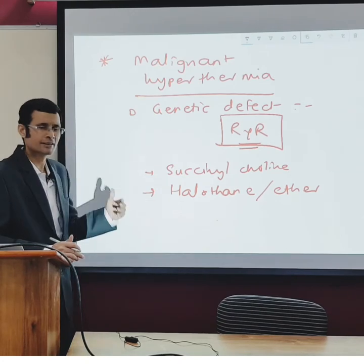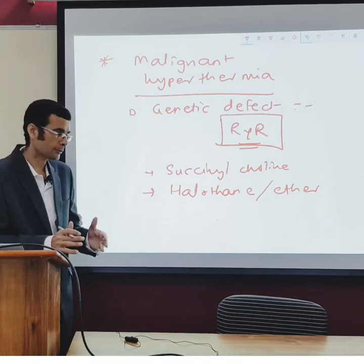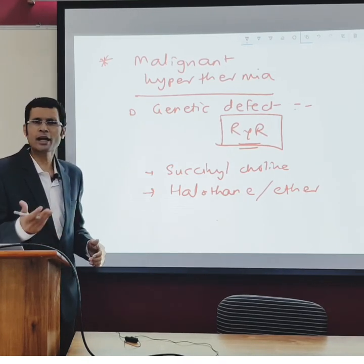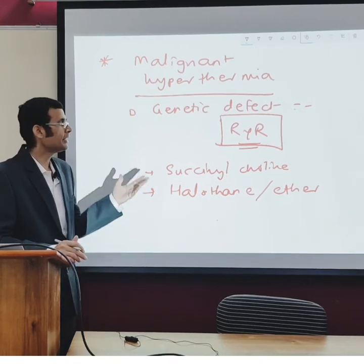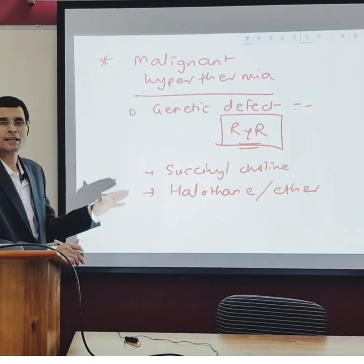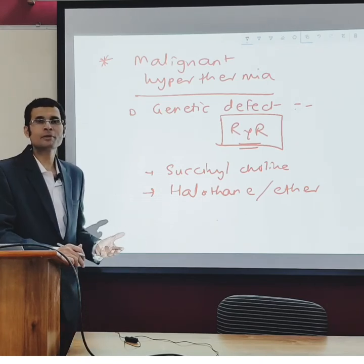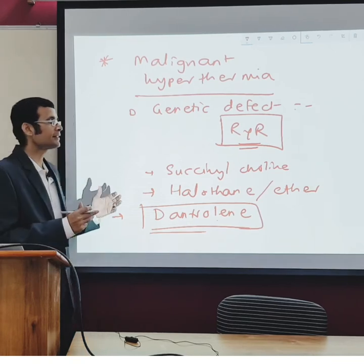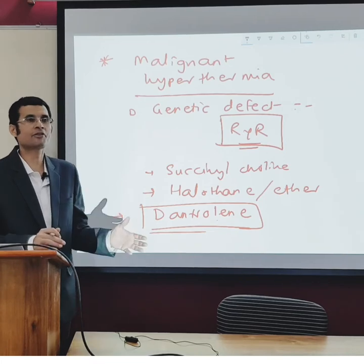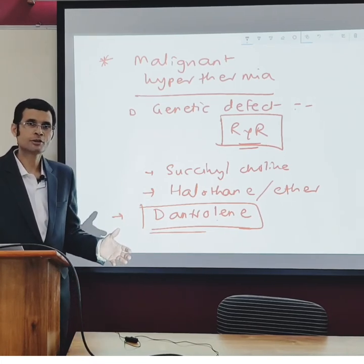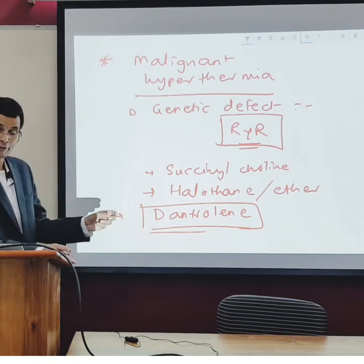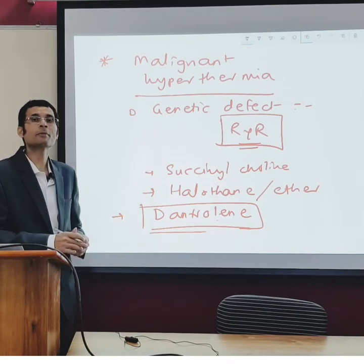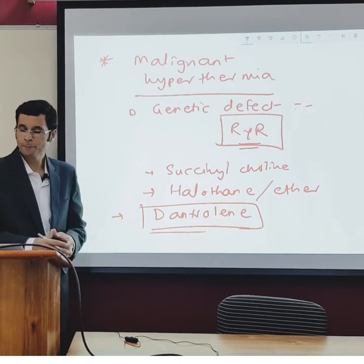On the operation table, this presents as severe muscle contractions, tachycardia, and increased body temperature. The treatment for malignant hyperthermia is dantrolene sodium. Dantrolene is said to be the uncoupler — it uncouples electrical excitation from mechanical contraction, so that electrical excitation would not result in muscle contraction and there would not be excessive heat generation.